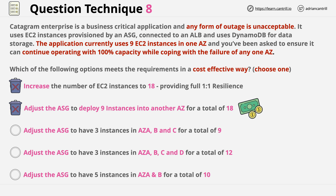The third answer suggests changing the auto-scaling group so it has three instances in three availability zones — A, B, and C — for a total of nine EC2 instances. This is cheaper than answers 1 or 2, but does it meet the question requirements? If one availability zone fails, that means we only have six instances remaining, and since nine is the minimum, this answer is also wrong.